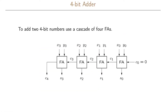To add n-bit numbers, we simply cascade these full adders. For example, to add two 4-bit numbers, we use a cascade of four full adders. The input carry to the first full adder is set to 0. We add the least significant bits x0 and y0, getting sum s0 and a carry that propagates to the next stage.